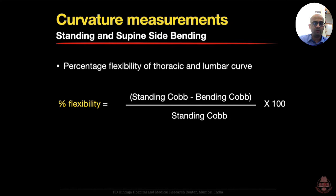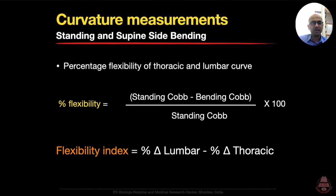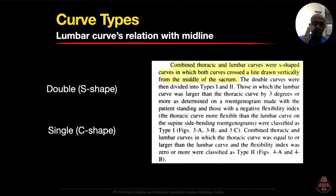The percentage flexibility of the thoracic and lumbar curve was calculated by subtracting the bending Cobb from the standing Cobb, divided by the standing Cobb, multiplied by 100. A flexibility index was calculated by subtracting the thoracic from the lumbar flexibility. If the lumbar flexibility was larger than the thoracic flexibility, the flexibility index was a positive number. If the lumbar curve was stiffer than the thoracic curve, the flexibility index was a negative number. The curve types were essentially two: double curves (S-shaped) and single curves (C-shaped).